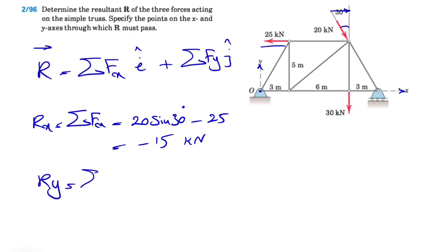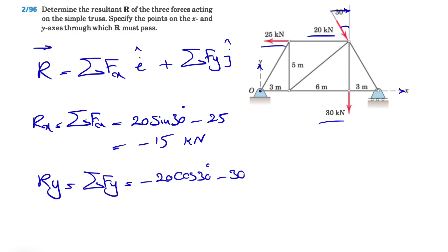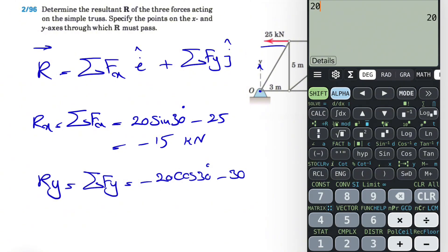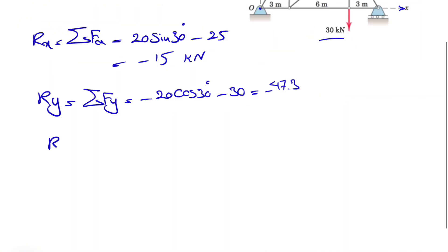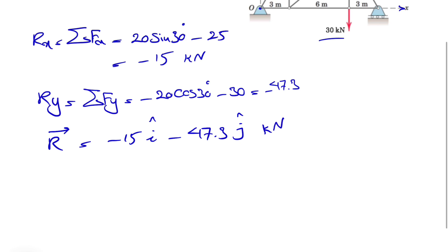Now let's find the y component. We have the y component of the 20 kilonewton force, which is downward and negative, so minus 20 cosine of 30 degrees. We also have the 30 kilonewton force, which is already downward — another negative component. So we have 20 times cosine of 30 degrees, which is 17.3, plus 30, giving us minus 47.3. So our resultant R is minus 15i plus minus 47.3j kilonewtons.